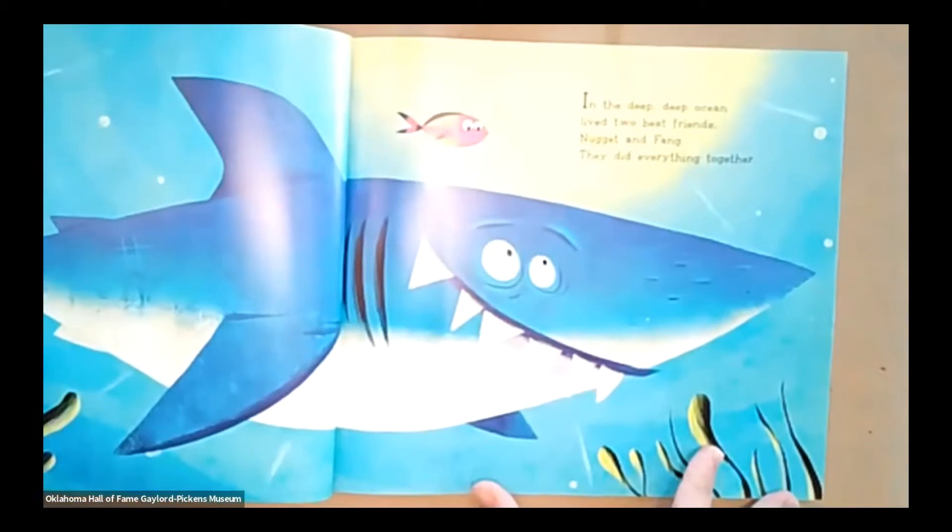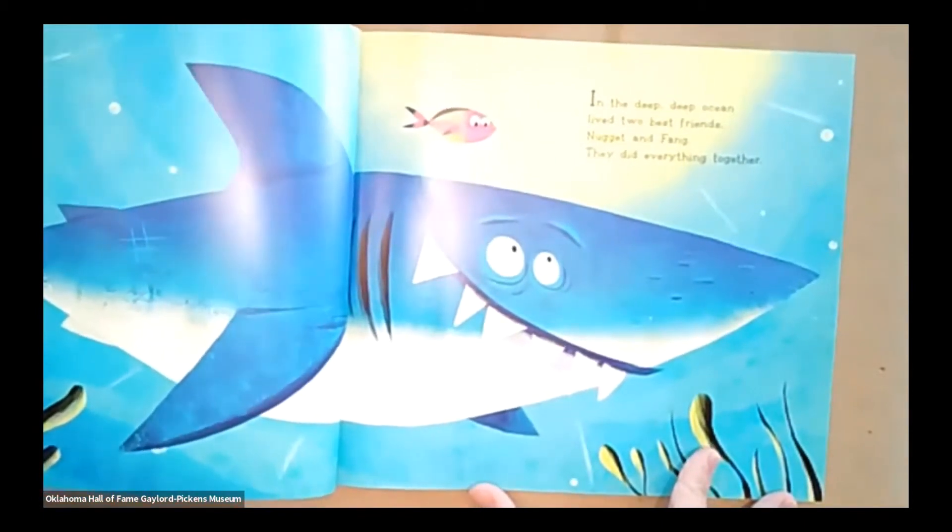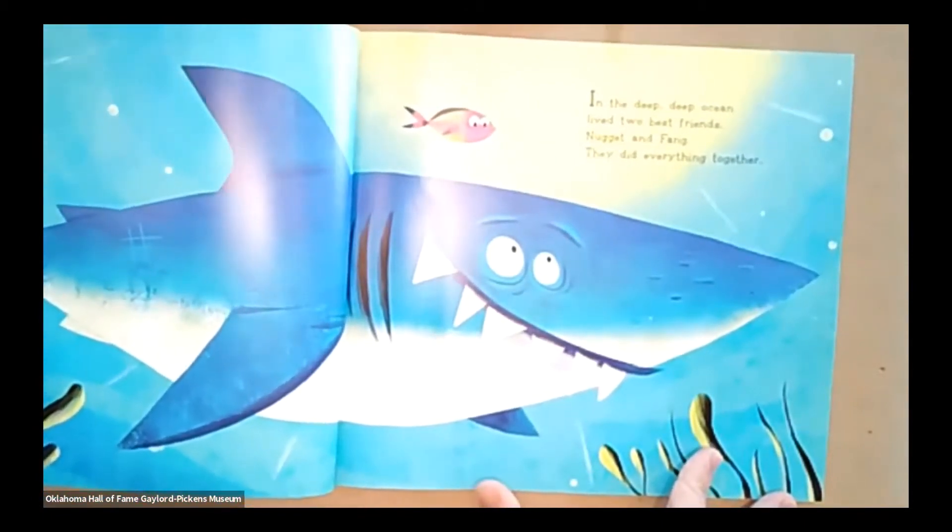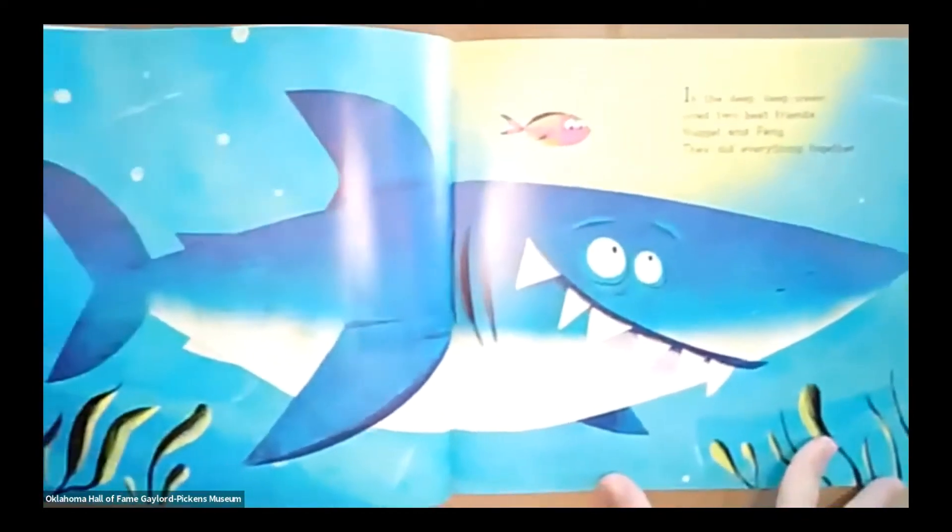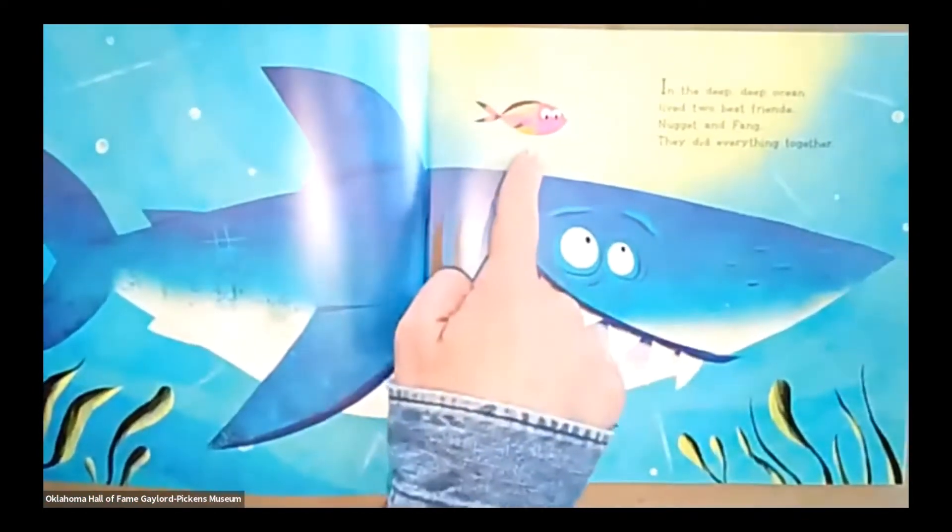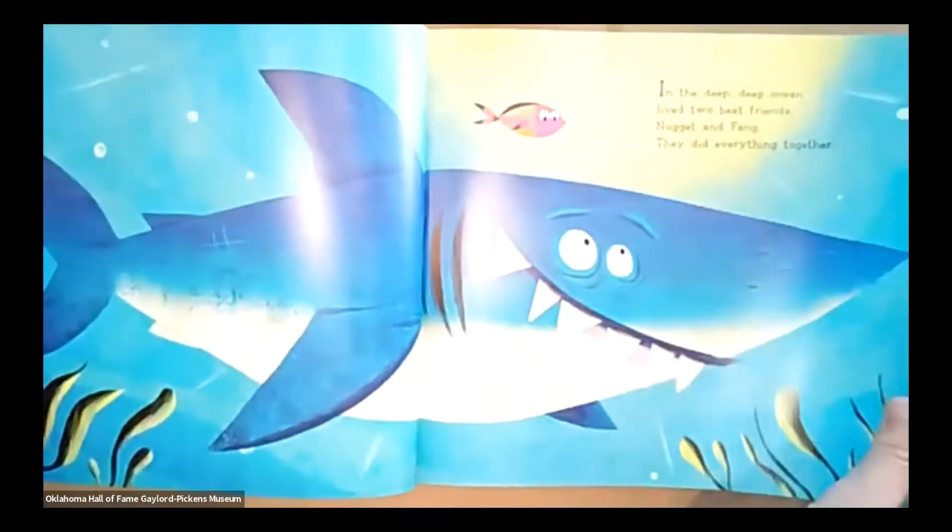In the deep, deep ocean live two best friends, Nugget and Fang. They did everything together. See how much bigger Fang is than Nugget? That's a little fish compared to a big shark.